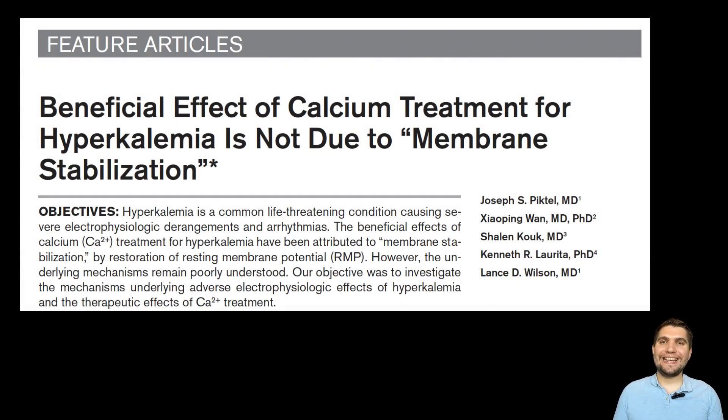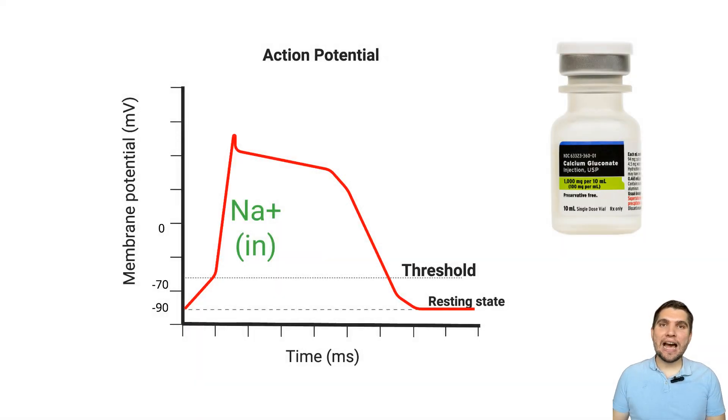New research challenges this idea. A recent study by Pictal and colleagues used canine cardiac cells and wedge preparations to test exactly what's going on when we give calcium during severe hyperkalemia. Calcium gluconate did not restore the elevated resting membrane potential, and it did not affect fast sodium channels, meaning it had no effect on threshold potential either.